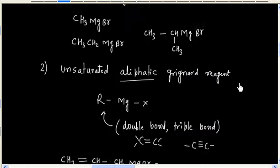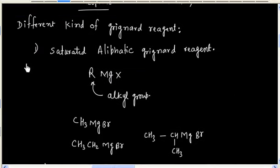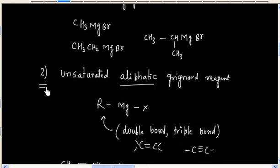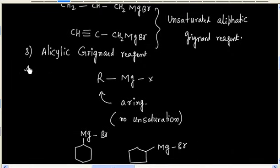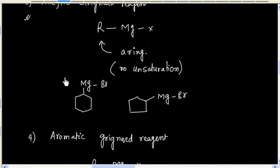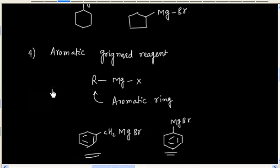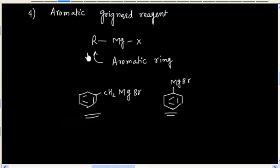So, we discussed 4 kinds of Grignard reagents. We can have a saturated aliphatic Grignard reagent where R contains no double bond or triple bond. We can have an unsaturated aliphatic Grignard reagent where R contains a double or triple bond. We can have an alicyclic Grignard reagent where R contains a ring but the ring contains no unsaturation. And we can have an aromatic Grignard reagent where R is an aromatic ring.